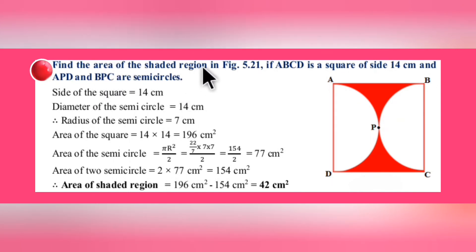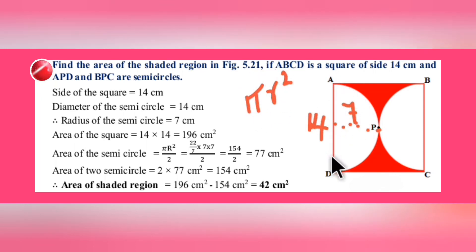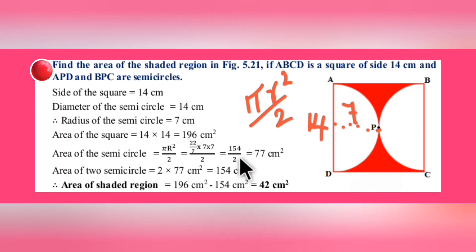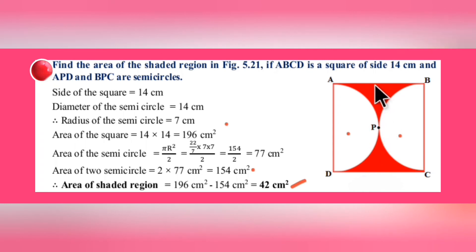Similar question: Find the area of the shaded region where ABCD is a square of side 14 cm and APD and BPC are semicircles. Since the full side is 14 cm, radius = 7 cm. Area of one semicircle = πr²/2 = 77 cm². For two semicircles: 2 × 77 = 154 cm². Area of square = 196 cm². Shaded area = 196 − 154 = 42 cm².